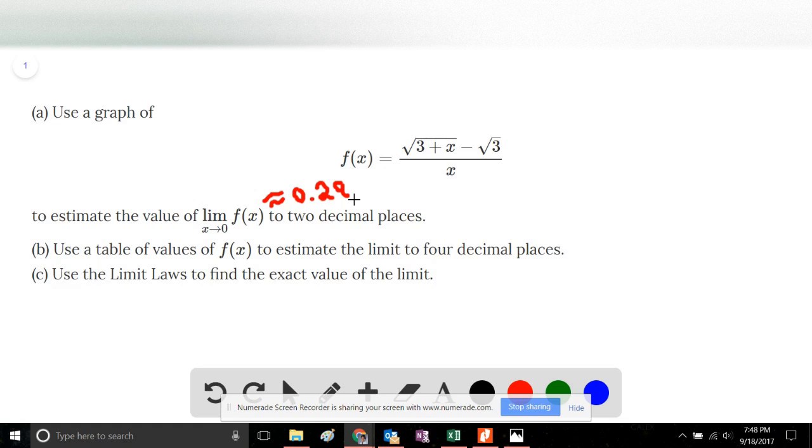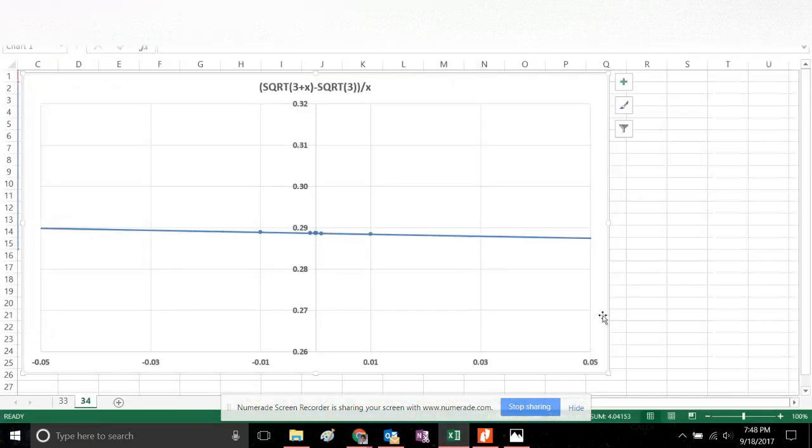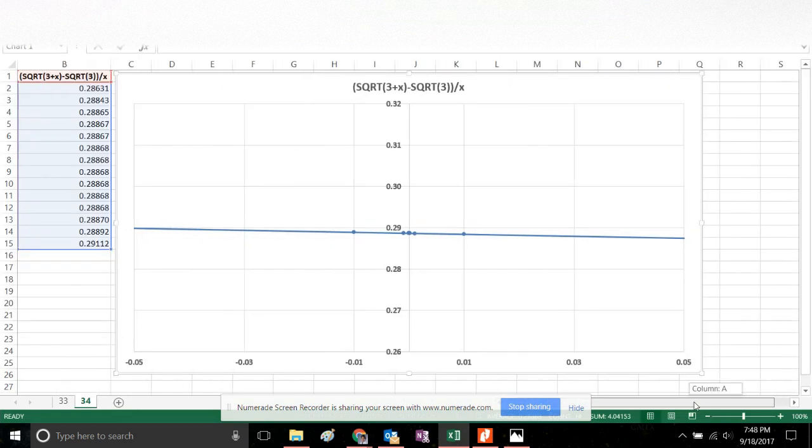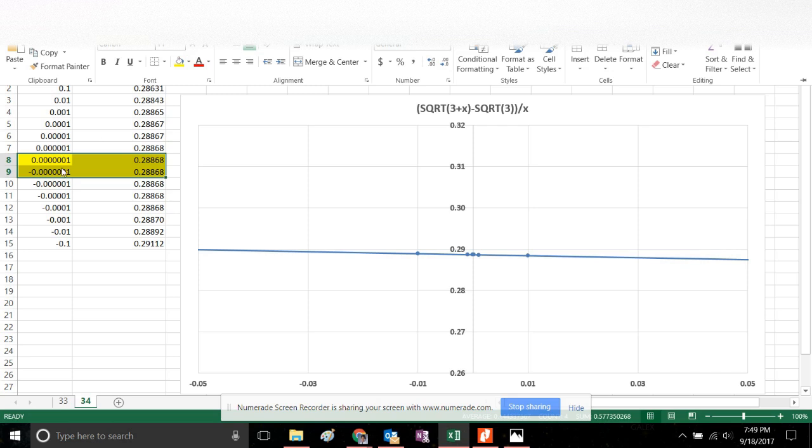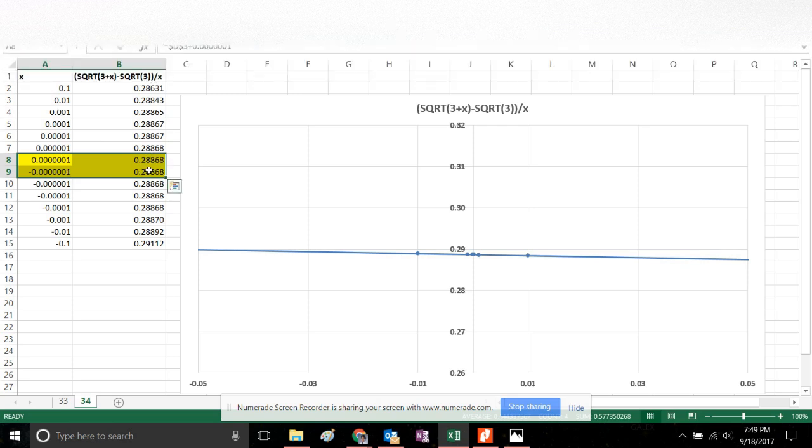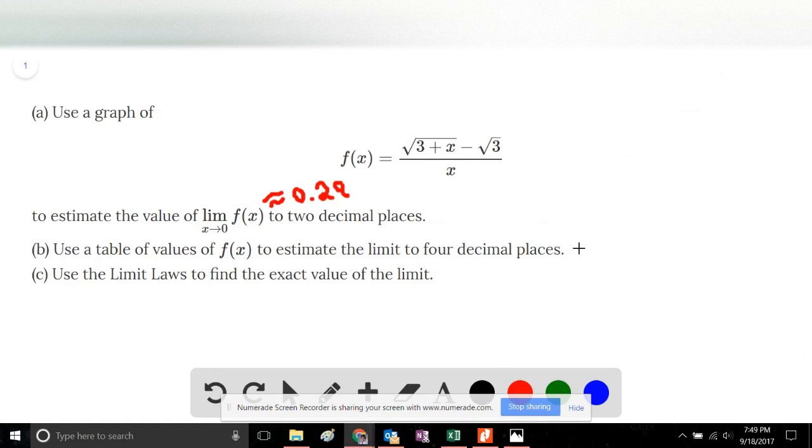Part B: Use a table of values of f(x) to estimate the limit to four decimal places. We use a table to plot this function very close to 0, and we see that the closer we get to 0 from the left and right, the closer we approximate the function value to be 0.2887 to four decimal places. That is our new improved estimate.